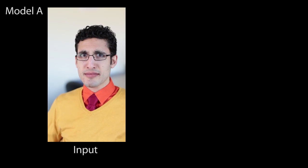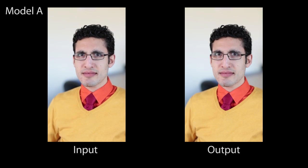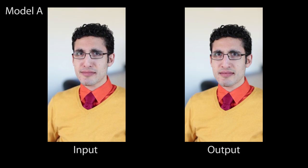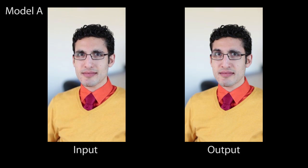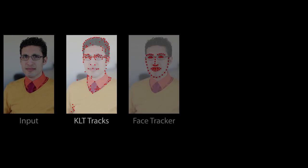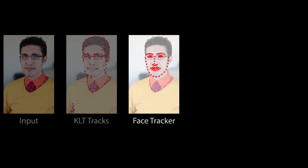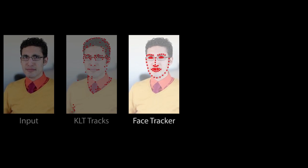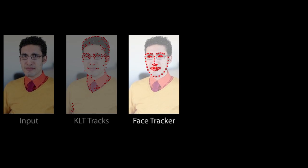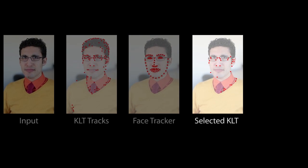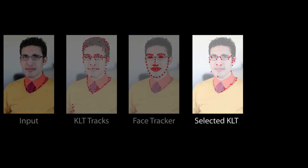We present a technique that generates a portrait cinemagraph from an input video automatically. For an input video, we first compute KLT tracks. We also track facial feature points throughout the video so that we can determine the location of the face as well as the moving facial parts relative to it. Using this information, we prune tracks that lie on moving regions and fit a homography using RANSAC with the remaining tracks to align the face and torso.